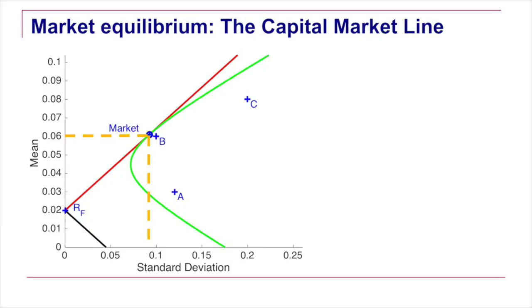From that observation, we can say something about the red line, the characteristic of the red line. Like any affine function, straight line, it is characterized by its intercept where it starts and here it starts at the level of the risk free rate and the second element that characterized the equation of a line is the slope.